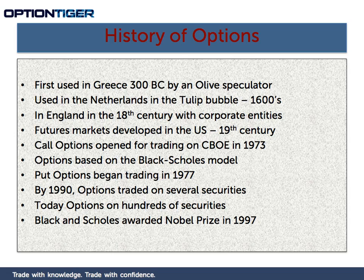By 1990, options were traded on several securities. Today, we have options on hundreds of securities — commodities like gold, silver, and oil; currencies like the euro and the US dollar; and hundreds of stocks and indices as well. Options have become a very popular instrument in the last 20 years. Black and Scholes were awarded the Nobel Prize in 1997 for their Black-Scholes options pricing model.